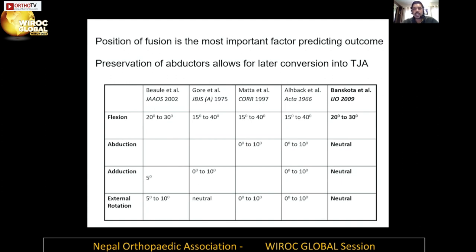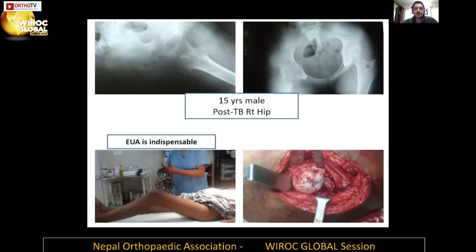Position of fusion is the most important factor predicting outcome. Various papers, including one we published, show you need a bit of hip flexion, neutral rotation is acceptable, but you should never adduct the hip — always want a little abduction to facilitate gait — and external rotation is preferred over internal rotation. Nowadays, with advances in total joint arthroplasty, if we preserve the abductors we open the door to do an arthroplasty later on.